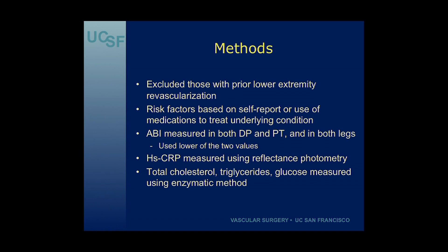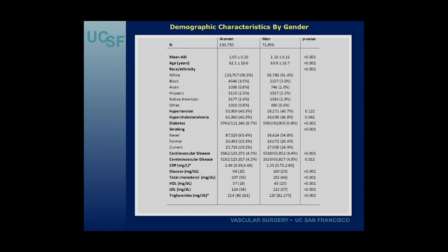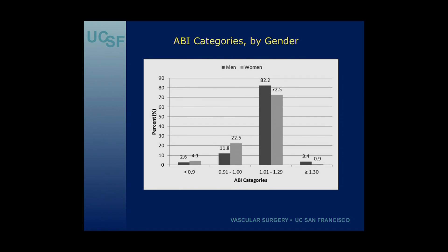The ABI was measured in both legs, in both the dorsalis pedis and posterior tibial arteries, and we used the lower of the two values. The demographic characteristics show that the mean ABI was lower in women compared to men, and women were slightly older. Men were more likely to have hypercholesterolemia, diabetes, be current smokers, and have a history of cardiovascular disease. Women had higher median CRP levels. Looking at ABI categories by gender, women had a higher prevalence of ABI less than 0.9 and ABI 0.9 to 1.0, consistent with other population-based studies.